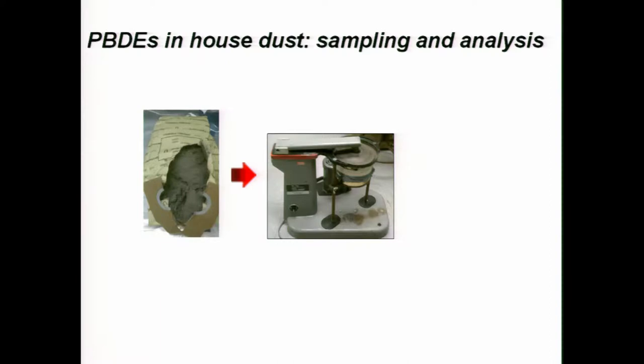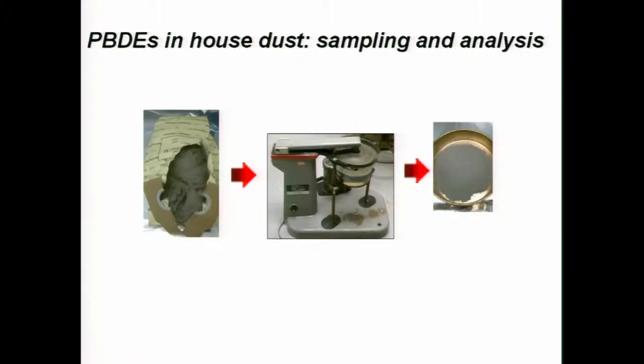It basically bounces it up and down and sorts the particles so that you get only the particles that are smaller than 150 microns. It keeps all of the debris or trash that you don't want in the top of the sieve and lets all of the fine dust through. It makes quite a racket while it's doing it. So you end up with this fine dust, which is what you use for the extraction process.